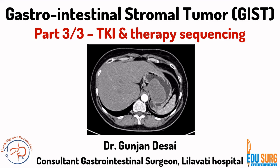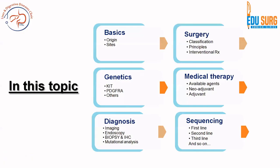Hello everyone and welcome to EduSearch Clinics. I am Dr. Gunjan Desai and this is the third part of our short series on gastrointestinal stromal tumour. This part is important because it is going to discuss tyrosine kinase inhibitors and therapy sequencing. We have already seen the genetics of GIST in the first part and the diagnostic approach as well as the role of surgery in the second part.